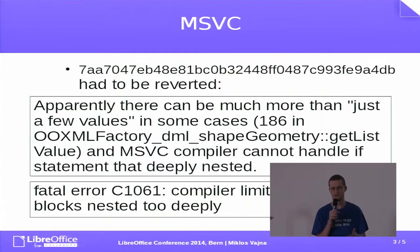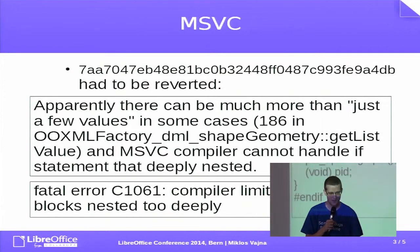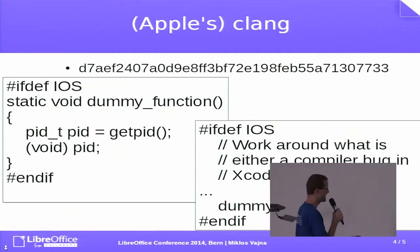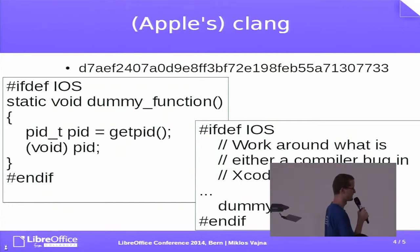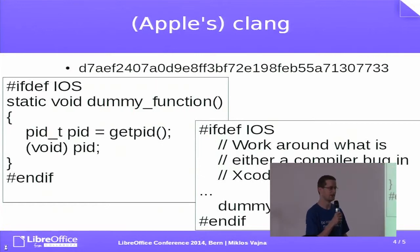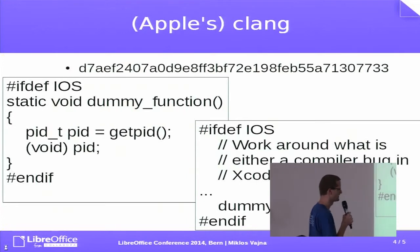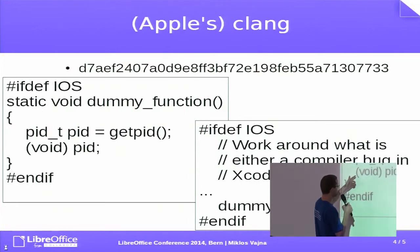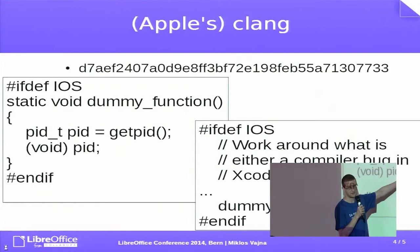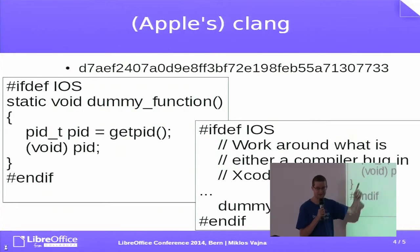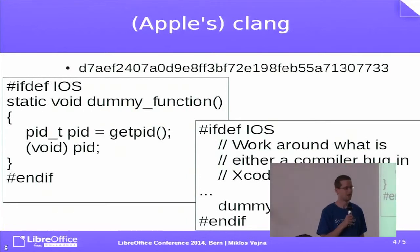So let's break Clang. There's a workaround for iOS where in the middle of the Writer layout rendering, if you are doing an optimized build, we have to call a dummy function where we query the process ID of the current application, and if we do nothing with it, the Writer layout gets fixed — sadly.